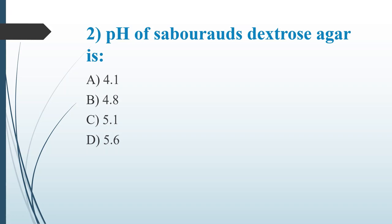The answer is Option D, 5.6. Sabouraud dextrose agar is a selective medium for fungal cultivation. It contains peptone, dextrose, and agar. pH has an essential role in the selective growth of fungi — most bacterial growth is inhibited at pH 5.6. However, some acidophilic bacteria can grow at this pH, so antibiotics like chloramphenicol, tetracycline, and gentamicin are used to reduce bacterial growth.